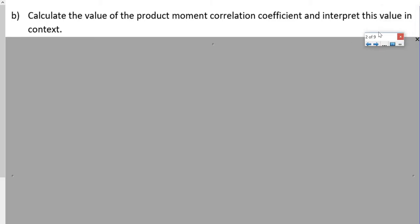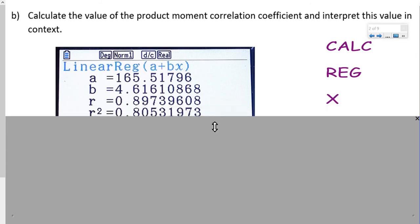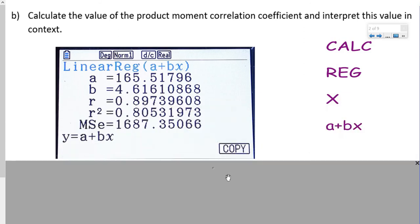Part B, finding the PMCC, product moment correlation coefficient and interpreting it in context. I've got all those values in my calculator, so I need to press calc reg x a plus b x to bring up this screen.